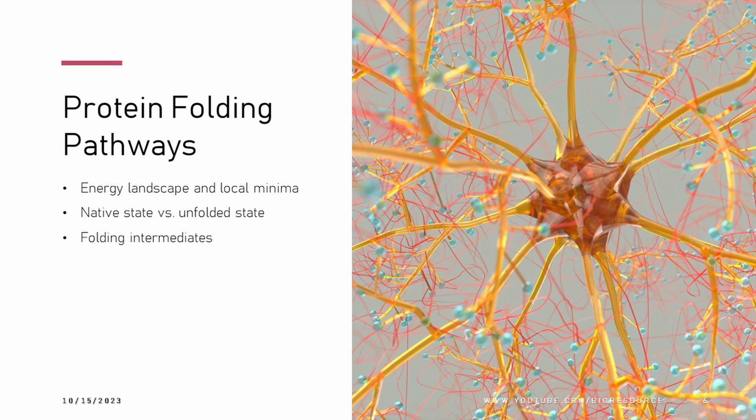Let's look at the different protein folding pathways. The energy landscape of a protein is a graph that shows the energy of a protein at different conformations. The native state is the lowest energy conformation, or the global minimum, while there are many other local minima on the energy landscape. The unfolded state is the least stable conformation with the highest energy. Folding intermediates are conformations on the path to the native state — more stable than the unfolded state but less stable than the native state.